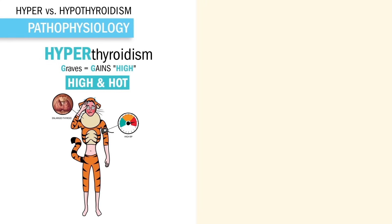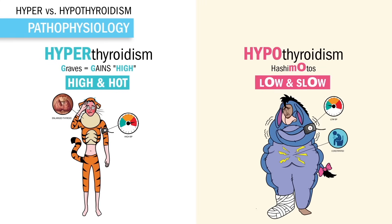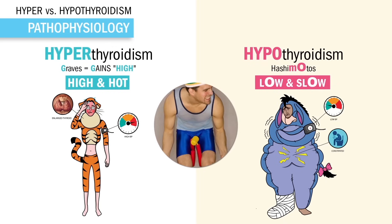Now on the other side, for hypothyroidism, we think low and slow energy. So start moving your thighs during the exam: for hyper, we have high energy, and for hypo, we have just this low and slow.